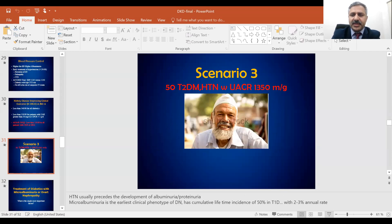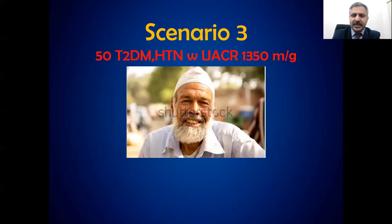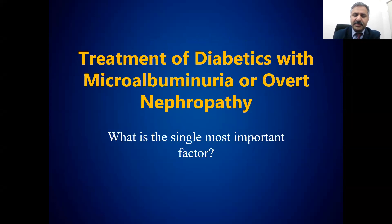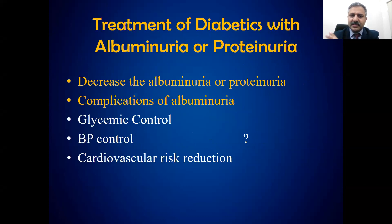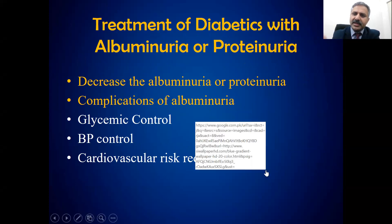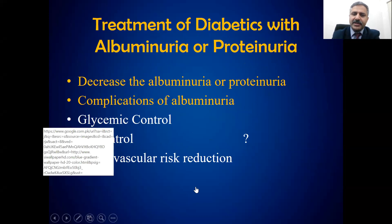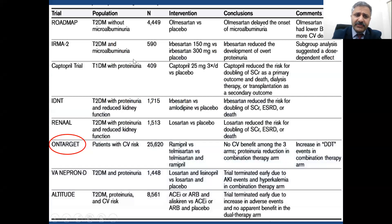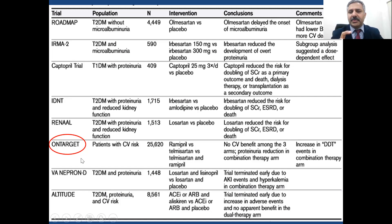Scenario three: a diabetic patient with hypertension who also has albuminuria. Micro- or macroalbuminuria with hypertension is again a compelling indication to use an ACE inhibitor or ARB. Blood pressure control is the single most important factor in addition to diabetic control, and ACE or ARB will also decrease albuminuria. Multiple trials — Roadmap, IRMA, Captopril, IDNT, RENAL, and OnTarget — have shown benefit of ACE and ARB. In OnTarget they tried combining ACE and ARB, but there was no additional benefit and in fact more drug-related side effects, so ACE and ARB should not be combined.